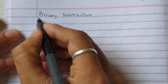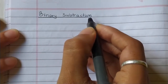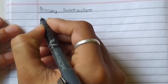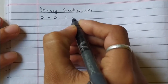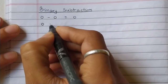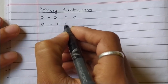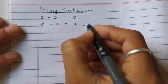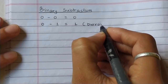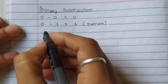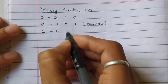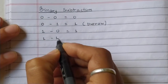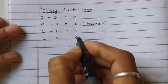Binary subtraction formula: zero minus zero is zero, zero minus one is one with a borrow, one minus zero is one, and one minus one is zero. So many people get confused — when you have one minus one, you get zero answer. These are the basic binary subtraction rules using the formula.